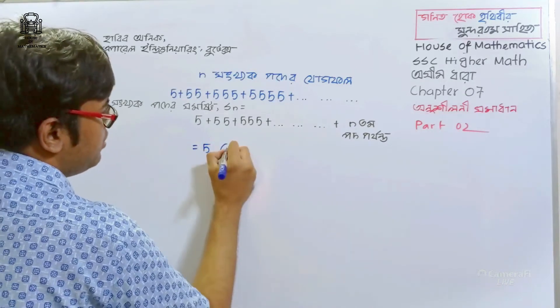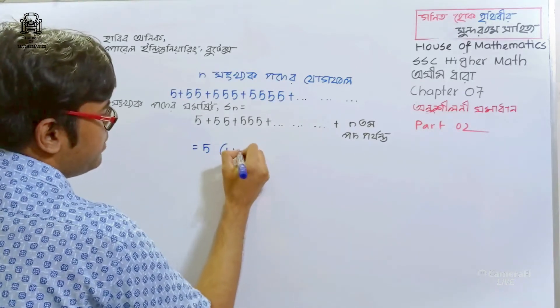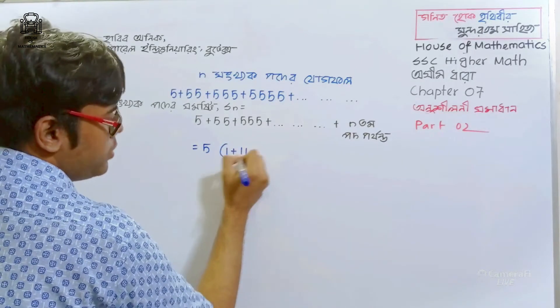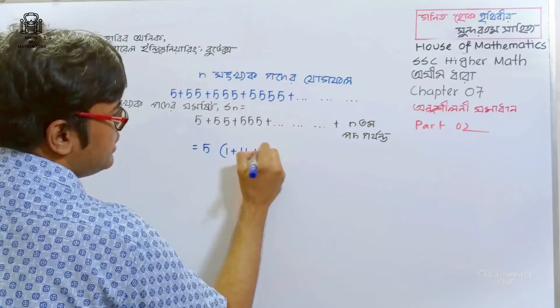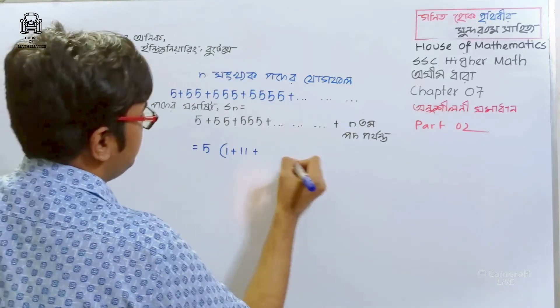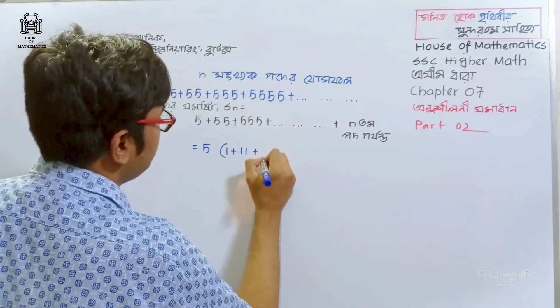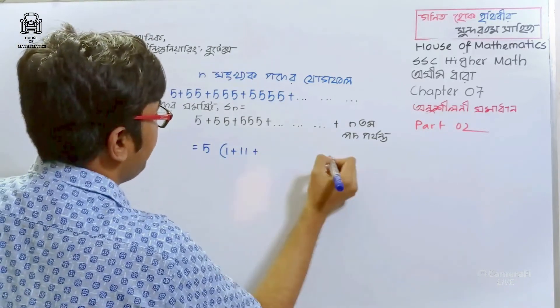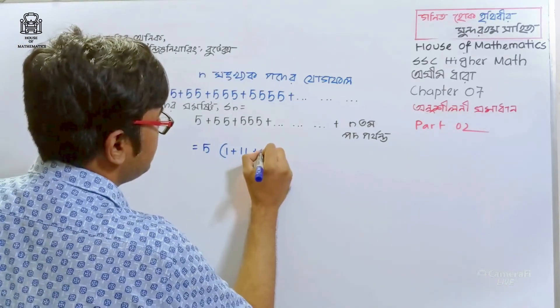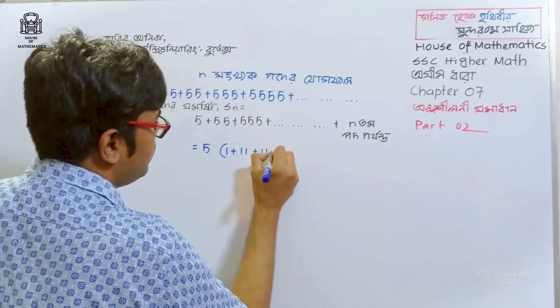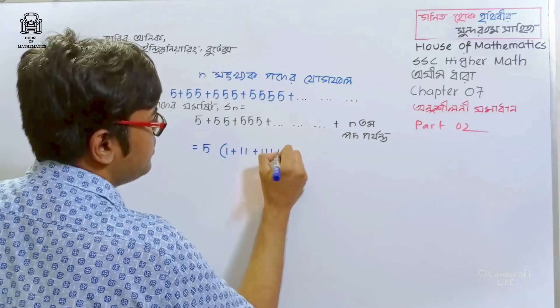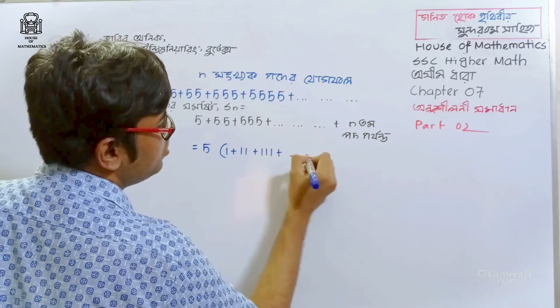So, in the common factor of 5, obviously 1 plus 1, 1, 1, plus... How much does this place? 1, 1, 1, plus — how much does this place?